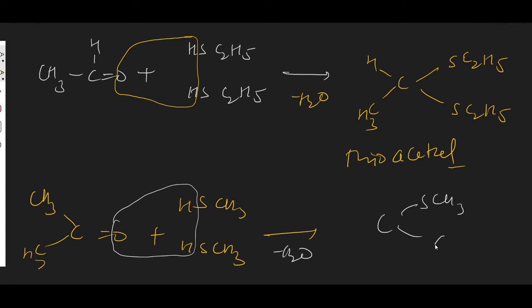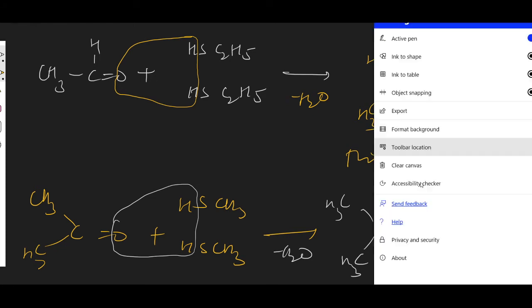If the reaction is done with a ketone instead, exactly the same reaction occurs — water is removed and the remaining compound forms a thioketal. This reaction of thiols is used for the protection of aldehydes and ketones, meaning to prevent these groups from reacting under different conditions.